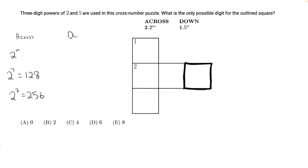For the down column, we have 5 to the nth power. The first power of 5 with three digits is 5 to the 3rd, which is 125. The next one is 5 to the 4th, and that's 625.